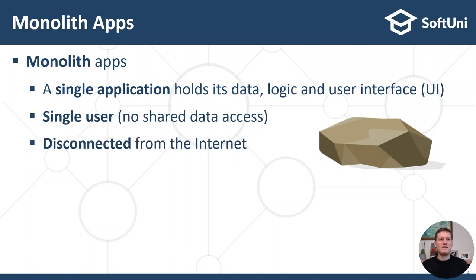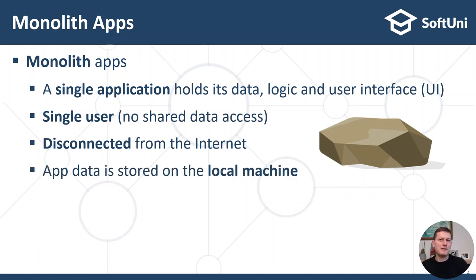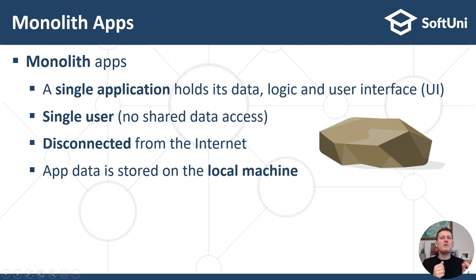Users interchange. Monolith apps are disconnected from the internet, which means they operate on the local machine without storing any data outside of the app. As an exception they can sometimes read some data from the internet, but generally they don't store anything outside of the app. The application data in the monolith app architecture is stored on the local machine, which means there is no server connected on the internet.